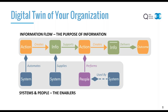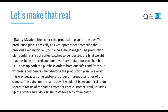I want to make this concept a bit more real. Here is a piece of text — just a discussion that might go on inside an organization when they're considering documenting what they do. This is a coffee roaster for a cafe. It's a pretty typical kind of conversation. Nancy is checking the production plan for the day, which is in Excel, compiled by Paul the wholesale manager. It contains a list of coffee batches to be roasted, the final weight that's been ordered, and the inventory held inside the organization. The purchase orders from cafes and wholesale customers are combined when the production plan is drafted, because they don't want to roast individual batches — it's not economical.